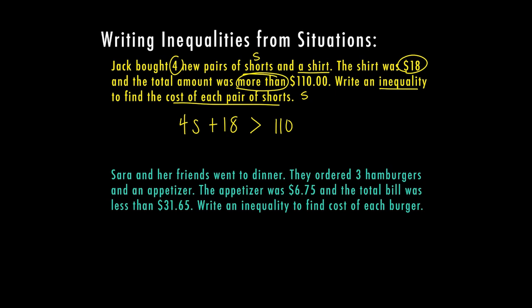So let's look at our last example. Sarah and her friends went to dinner. They ordered three hamburgers and an appetizer. The appetizer was $6.75. And the total cost of the bill was less than $31.65. Write an inequality to find the cost of each burger.